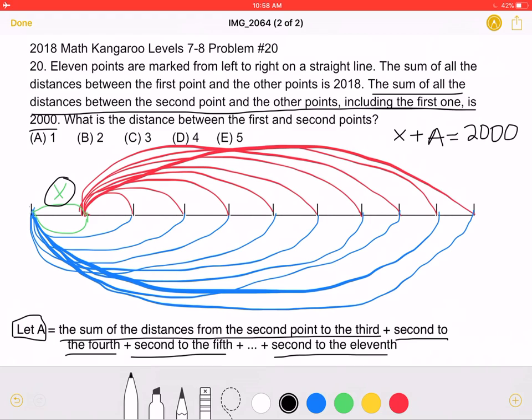Now let's take a look at the other statement, which is that the sum of all the distances between the first point and the other points is 2018.